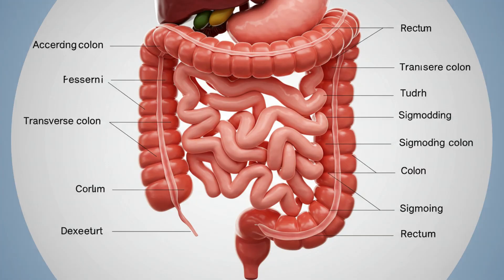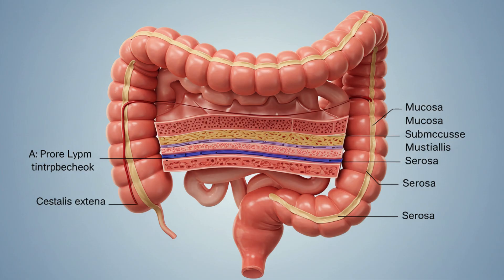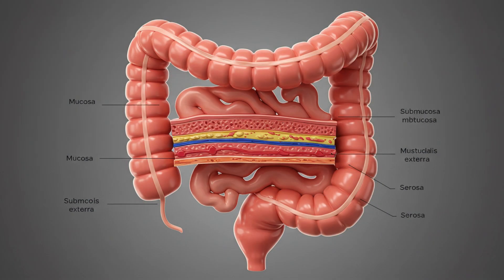Also, the wall of your colon has 4 main layers: 1, the mucosa; 2, the submucosa; 3, the muscular layer; 4, the outer serosa.